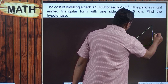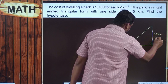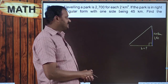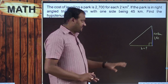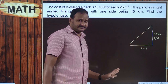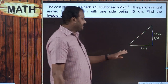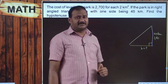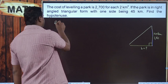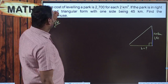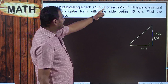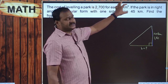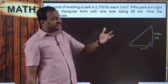The park is in the shape of a right-angle triangle with the right angle marked. One perpendicular side is 45 kilometers. To find the base, we first need the area of the triangle. The total cost per 2 square kilometers is 2700 rupees. So the area of the triangle equals 2700 divided by 2 square kilometers. This gives us area = half × base × altitude = 2700 / 2.